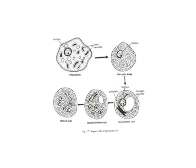The life cycle of Entamoeba coli is pretty much the same as Entamoeba histolytica, except that the trophozoite is non-invasive and just remains in the lumen of the large intestine. Also, unlike Entamoeba histolytica, the mature cyst here has 8 nuclei.